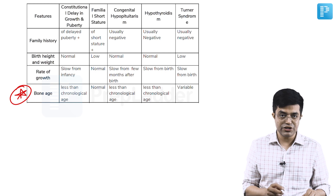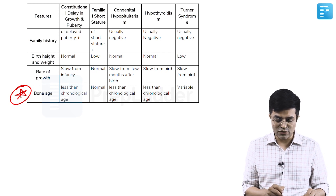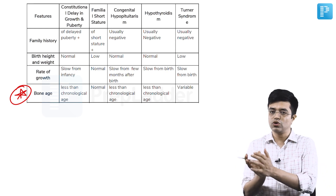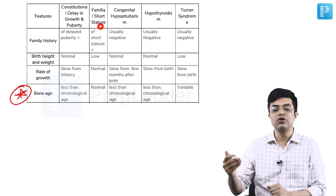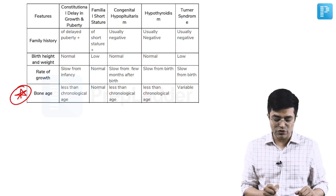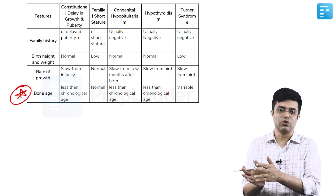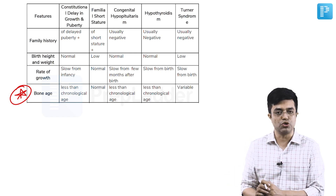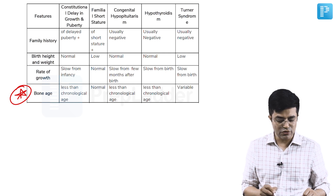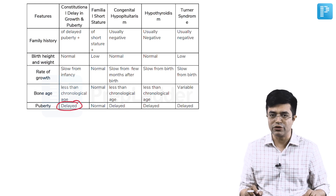Then we have bone age. Bone age is very frequently asked in exams. It is less than chronological age for constitutional delay in growth, meaning bones still have growth potential and these children tend to show late catch-up growth. In familial short-stature, bone age corresponds to chronological age and is found to be normal, so growth plate fusion tends to happen earlier compared to constitutional delay. Congenital hypopituitarism and hypothyroidism also have bone age less than chronological age, whereas in Turner syndrome it is variable — it varies from child to child.